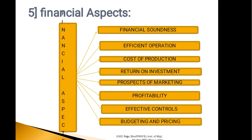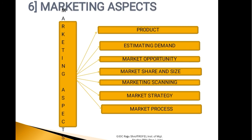Financial institutions examine the project to ensure economic justification of the investment details. They study the marketing scope of the project and its worth to the national economy — whether it is contributing to the GDP or not — by analyzing the consumption pattern and the potential demand for the project. So all these things are regarding the financial aspect. The sixth and last aspect, that is the marketing aspect, we will discuss in detail in the next session. Thank you students!